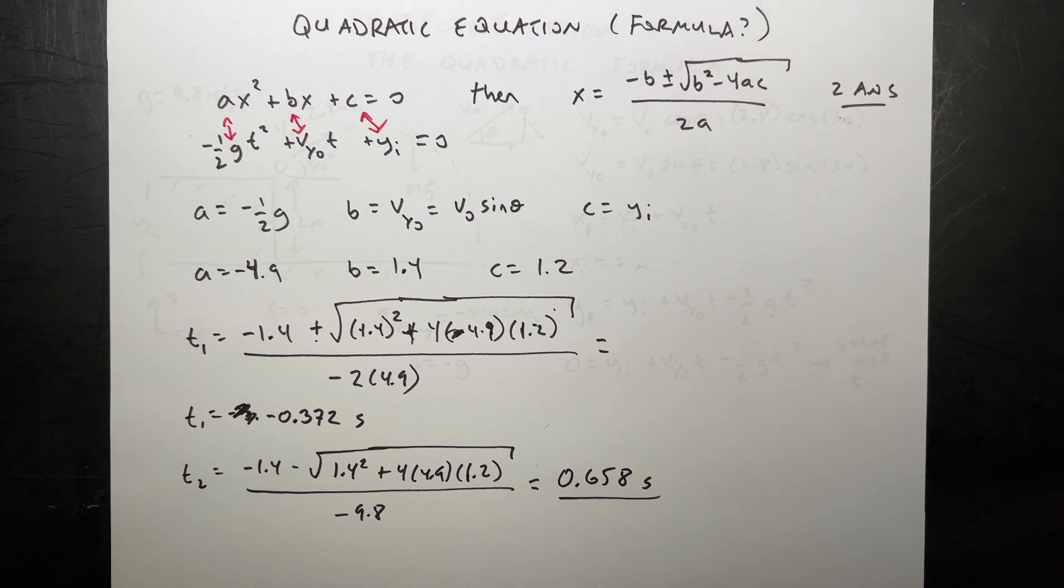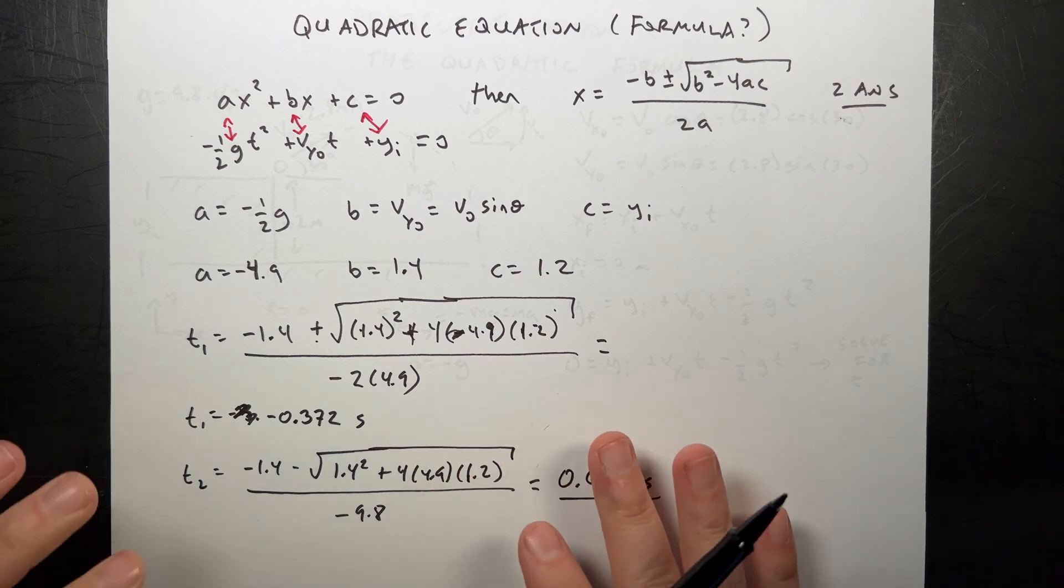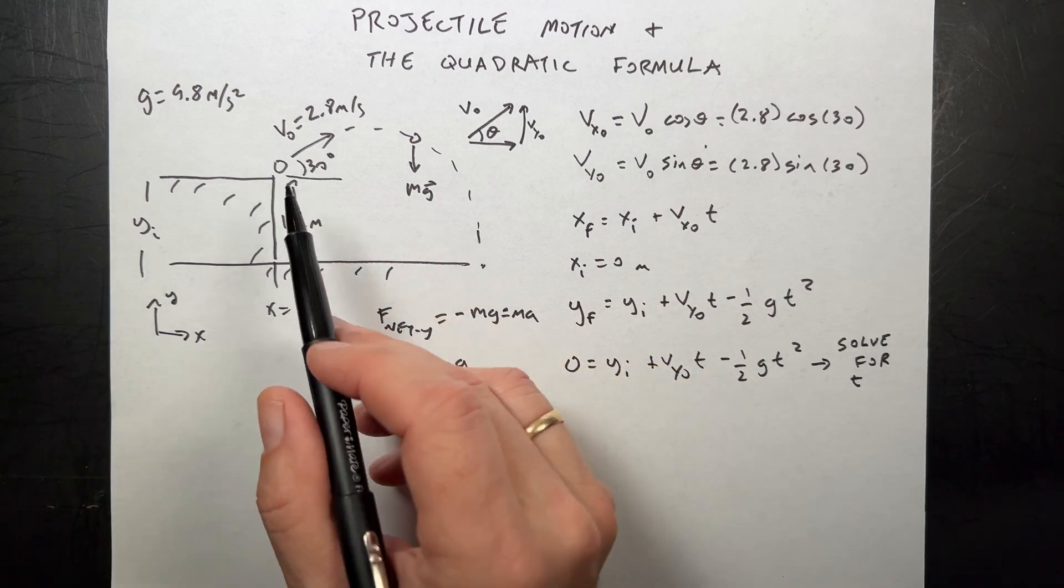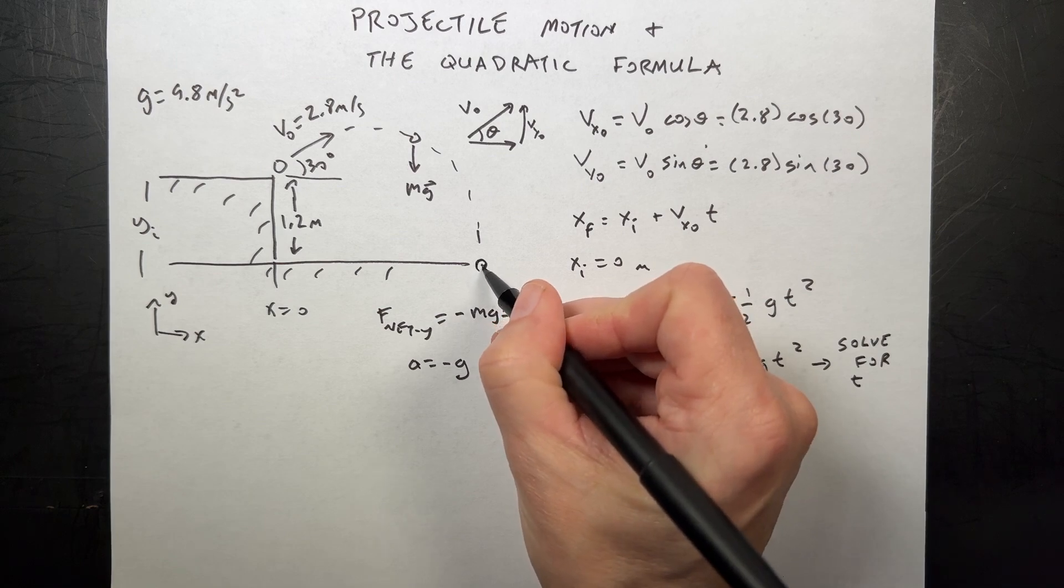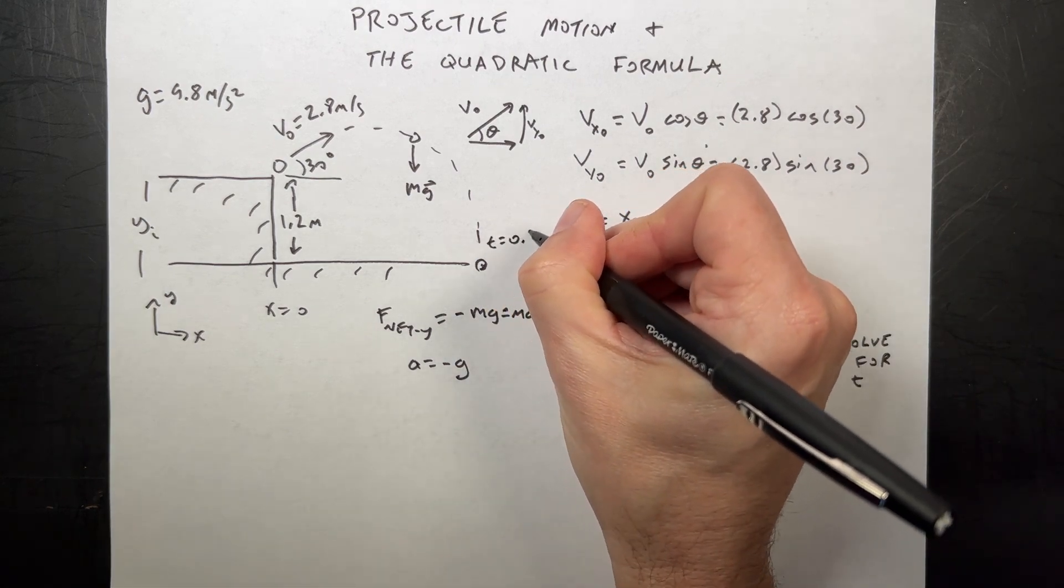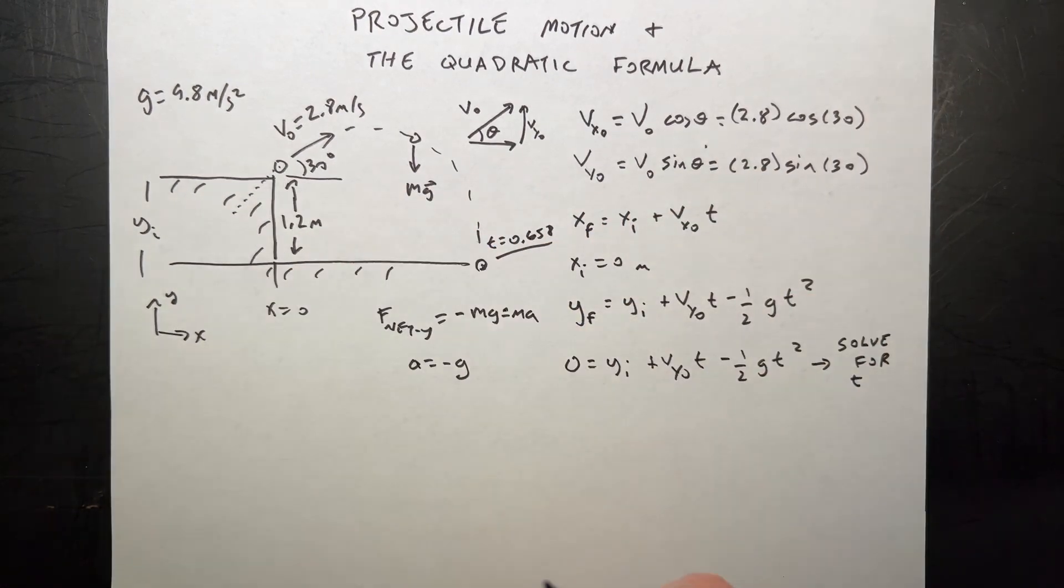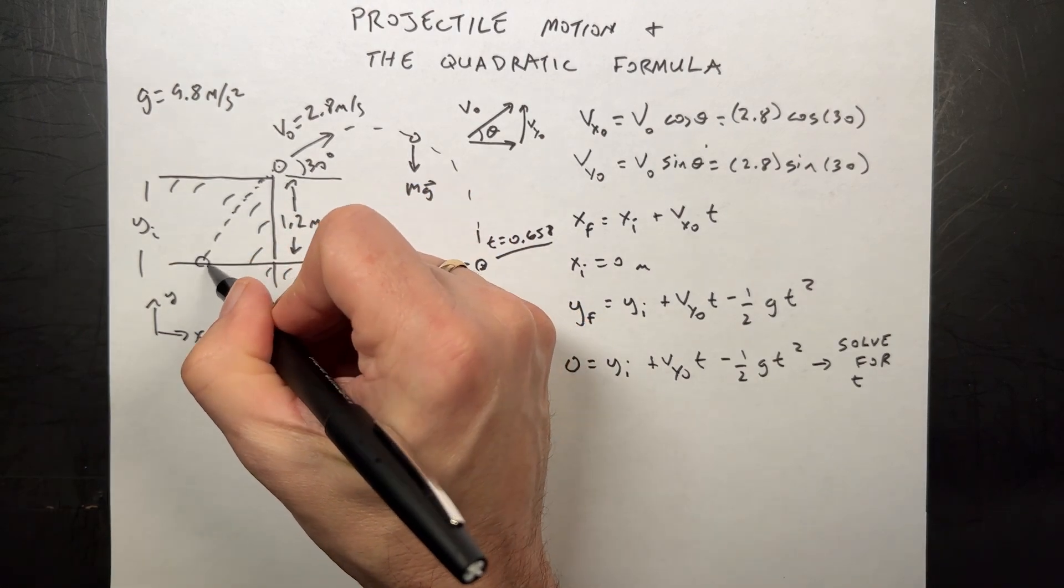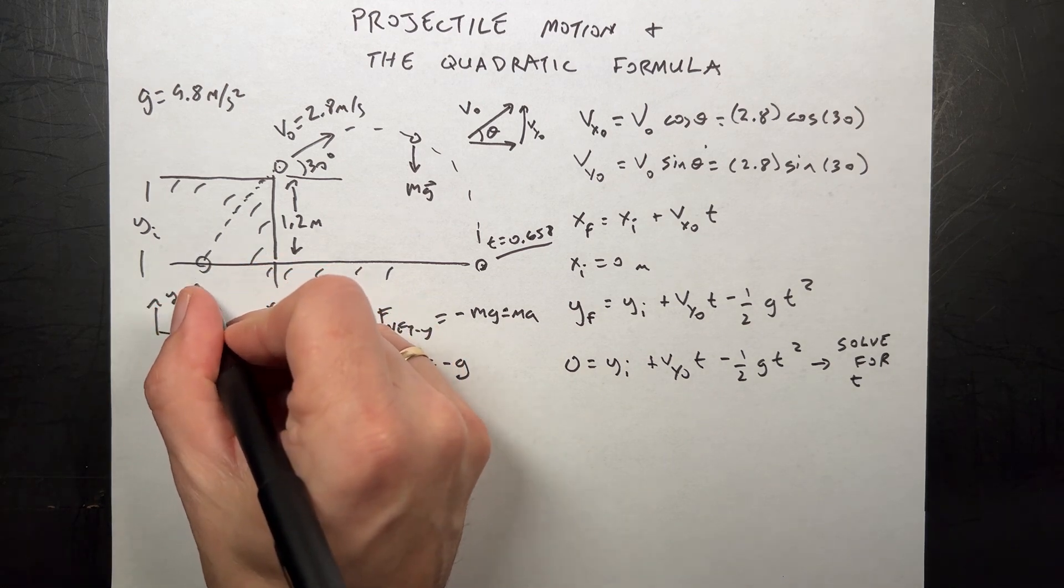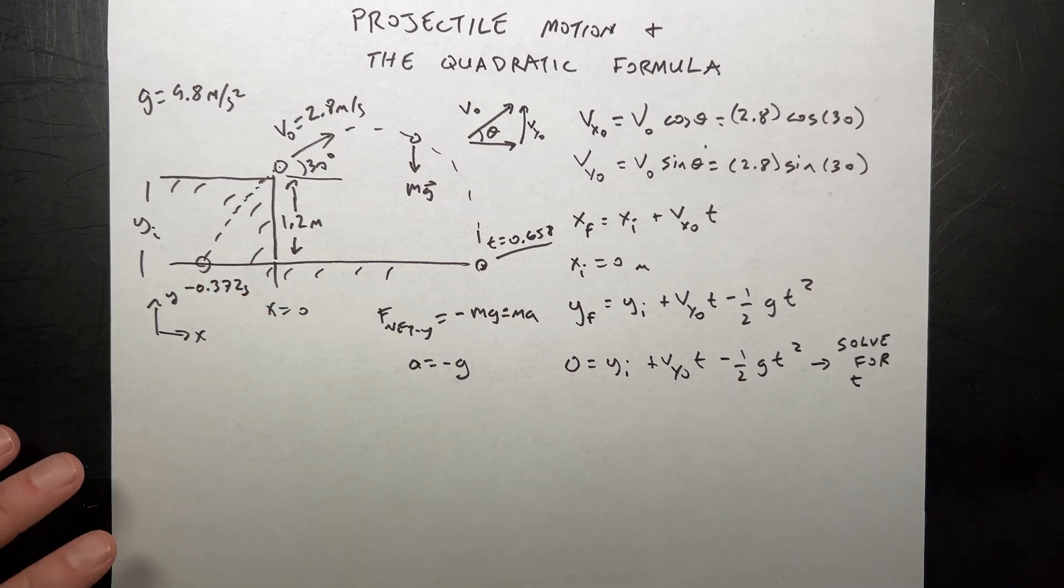This is important because the minus term gave me my positive time and the plus gave me a negative time. They both mean something. We're trying to find the time that this ball was at y equals zero. That's this location at 0.658 seconds. That's clearly the one we want. But if you imagine going back in time to some negative time, it was also at the ground. That's the negative 0.372 seconds. It does mean something.